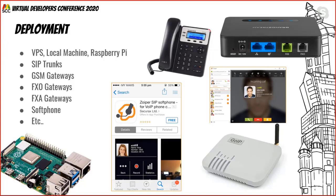You can have soft phones running on your mobile phone connecting as an extension and accepting calls. You can even have your gate connected to FreePBX — when somebody's coming, you dial an extension on your phone and it just opens the gate. You can connect it to Arduino. These are the different advantages of having such open source and free solutions.